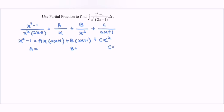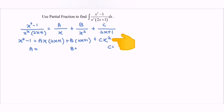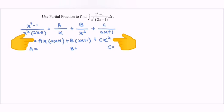To find A, we have to eliminate B and C at the same time. Notice that they do not have a common factor — referring to B, the factor is 2x plus 1; referring to C, the factor is x squared — so there is no common factor. To find B, we have to eliminate A and C. Notice that we have x for A and x also for C, so we have a common factor. If we substitute x equals 0, we can eliminate A and C at the same time.